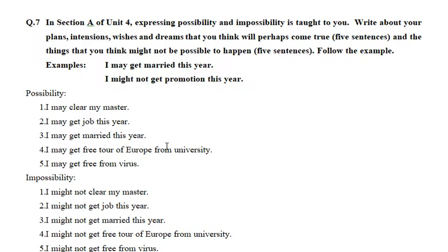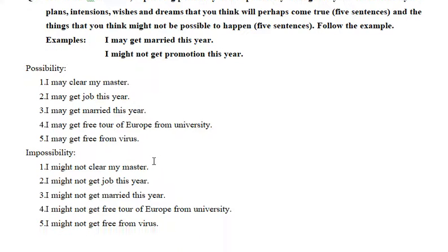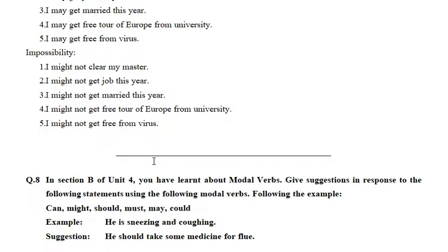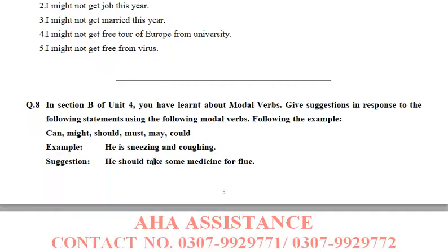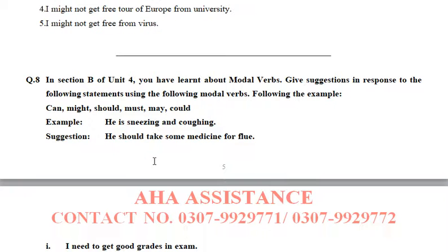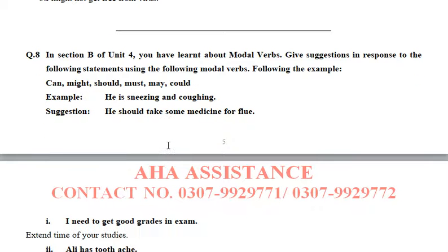In question number 7, you have to write five sentences about possibility and five sentences about impossibility. You have to write some things that are possible and some things that are not possible.